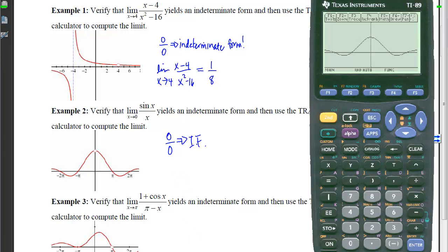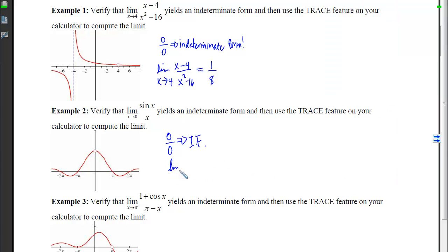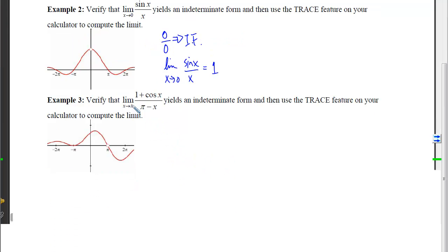Here on the calculator, you can see I've graphed that function in the same window. If I trace to 0, we verify there is a hole because I don't get a y-coordinate. If I trace really close to 0, it's looking like I'm approaching a y-coordinate of 1. If we recall, that old limit of sine of x over x as x approaches 0, that's one we should have memorized.